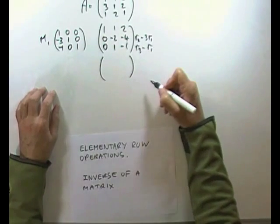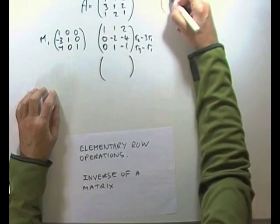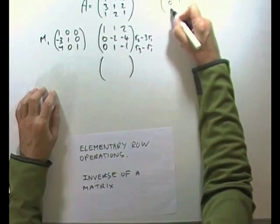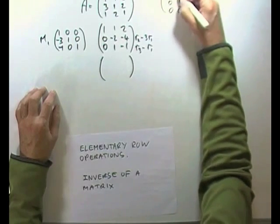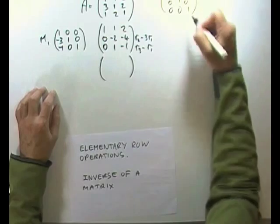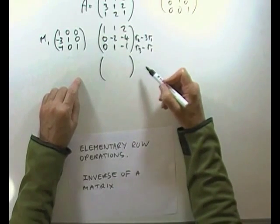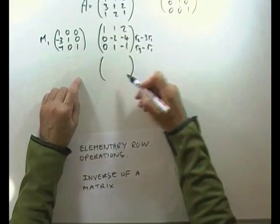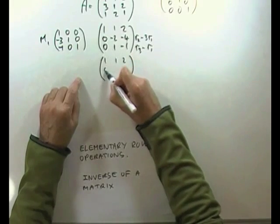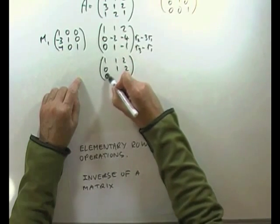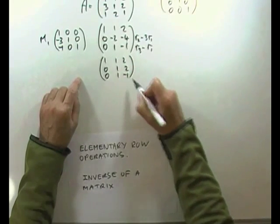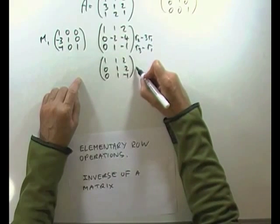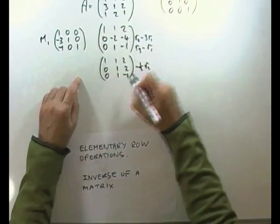On the way down to the identity element — the identity element being the main diagonal of 1s. On the way to the identity element, I'm going to simplify this first. I think I'd rather have this row look like 0, 1, 2. In other words, I'm going to take row 2 and divide it by 2. So that's a half of row 2.